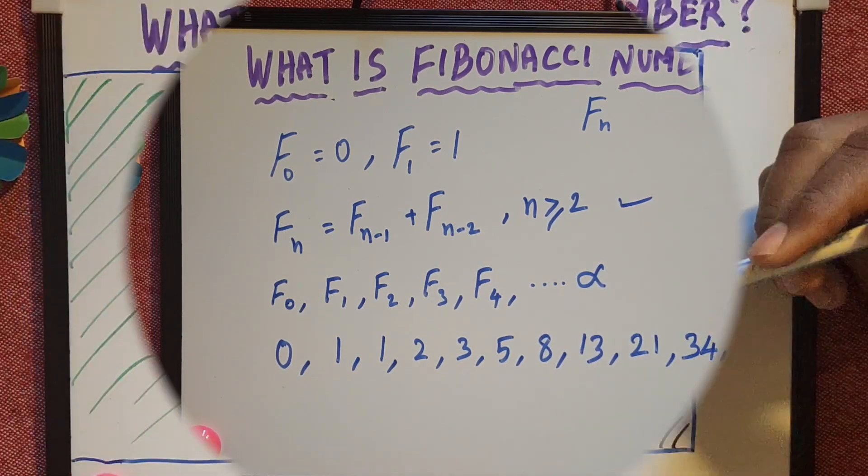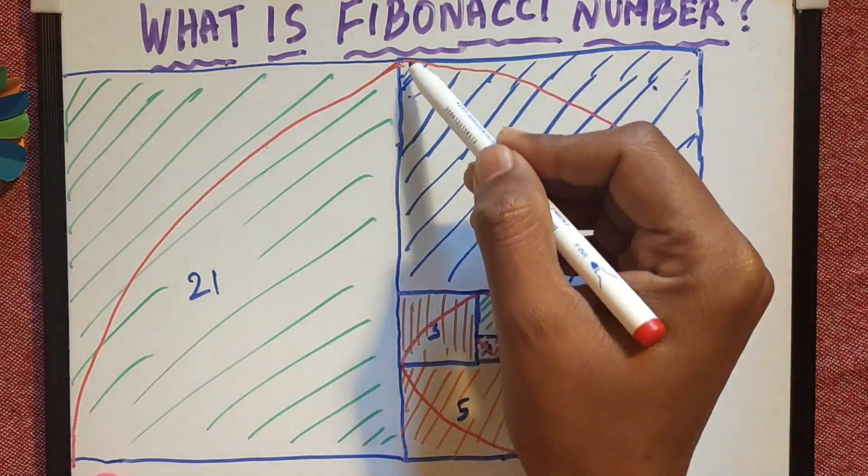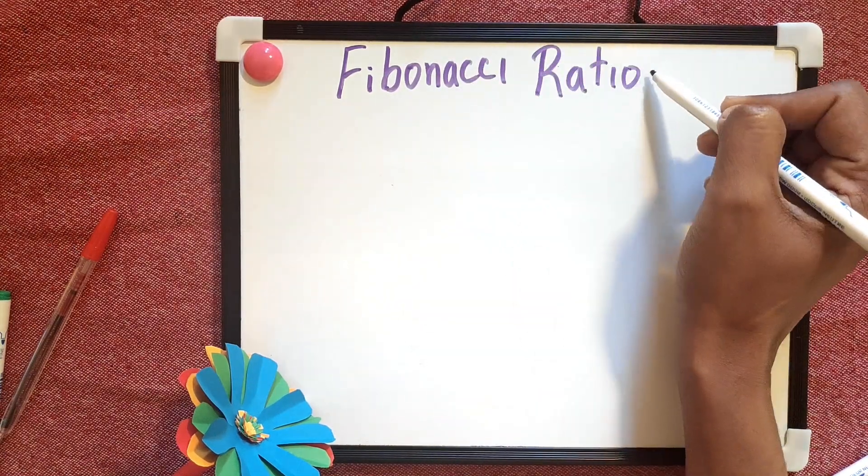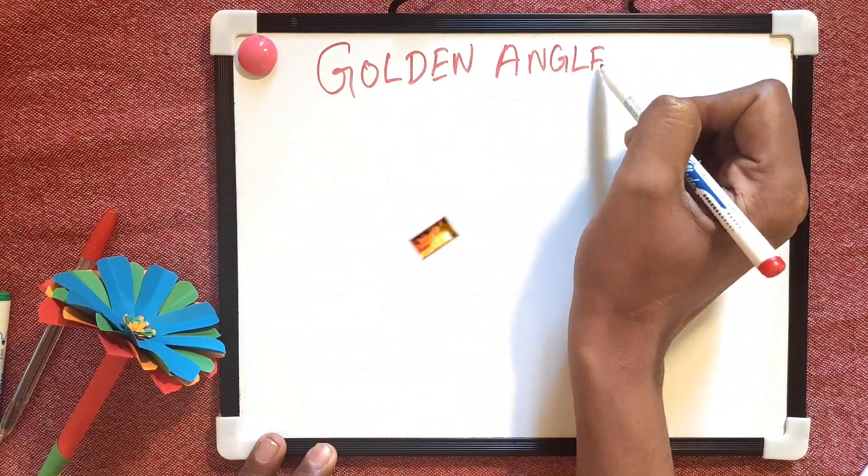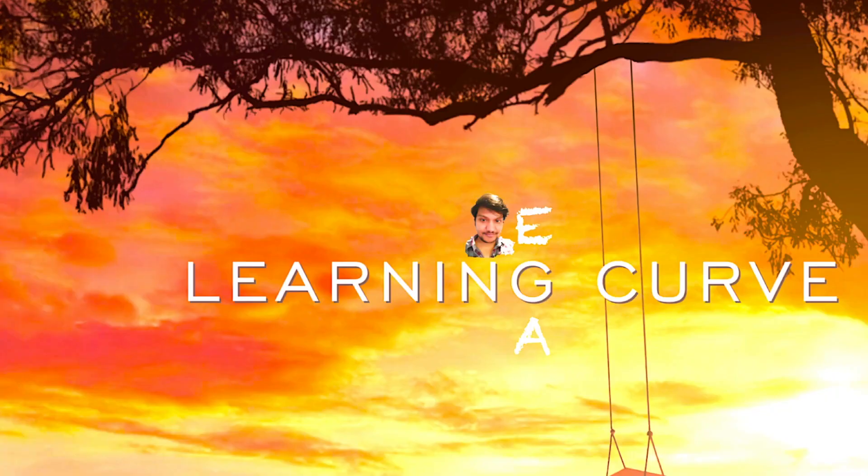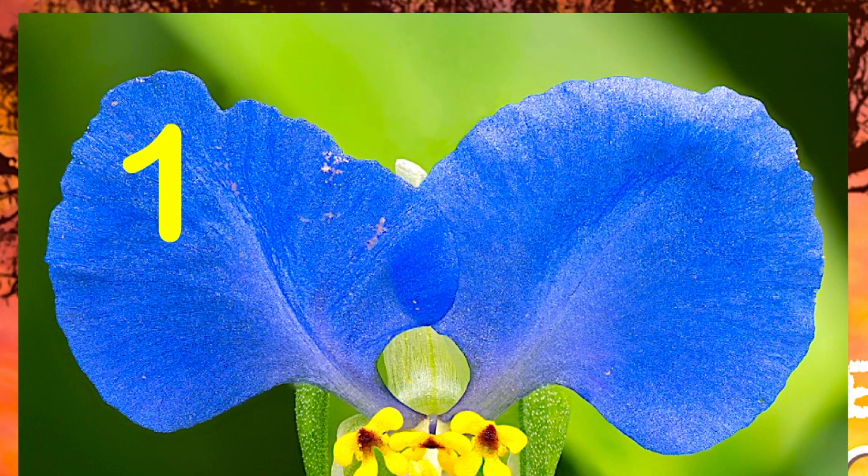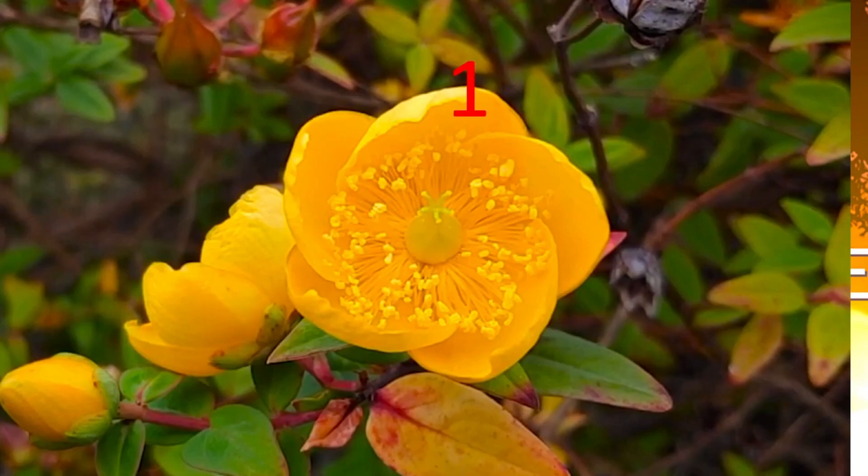We will discuss further on that. We discussed Fibonacci number, Fibonacci spiral, golden ratio and golden angle in my part 1 video. I will give the link in the description box. Just a recap of part 1 video here.